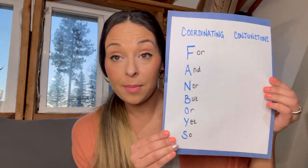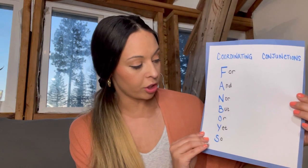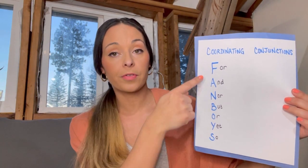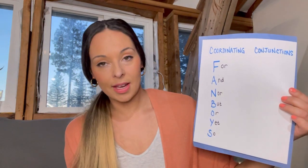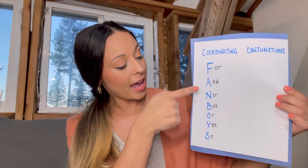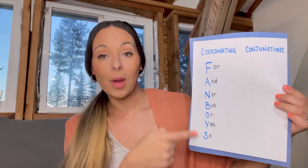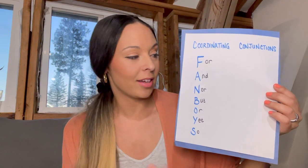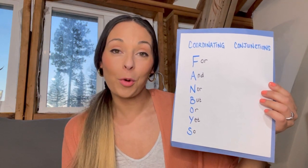For English, we have coordinating conjunctions, and we learn this as FANBOYS. The first letter of each word spells FANBOYS: for, and, nor, but, or, yet, so. That is coordinating conjunctions, and that's how we cover it for cycle two.